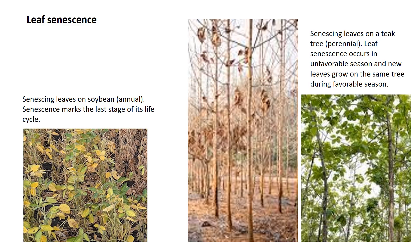In perennials, especially deciduous trees, leaf senescence occurs each year in unfavorable, i.e. dry or cold seasons. The released nutrients are relocated from the senescent leaves to phloem parenchyma and xylem tissues in the stem, mainly in the form of bark storage proteins. These proteins play a role in nitrogen storage during plant dormancy and are remobilized and reutilized for shoot growth in favorable seasons. Hence, remobilization of nutrients is the main outcome of senescence.